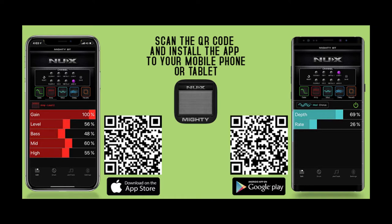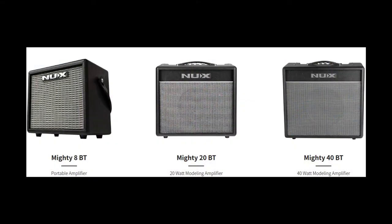The Mighty app from NUX allows you to control your Mighty BT amplifier using your Android or iOS device. It works for any amplifier in the NUX Mighty BT range, which saves you the hassle of having to download and set up separate apps for each amp, which has been the case for a lot of Bluetooth-enabled control apps in the past. Say you started out with a Mighty 8 BT and wanted to upgrade to the Mighty 40 BT, you can still use the same app to control it.